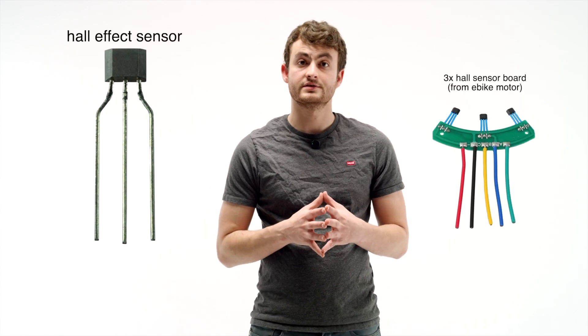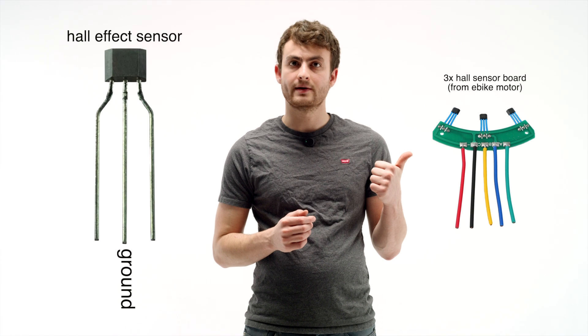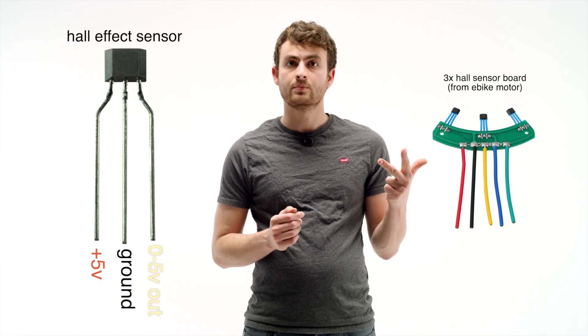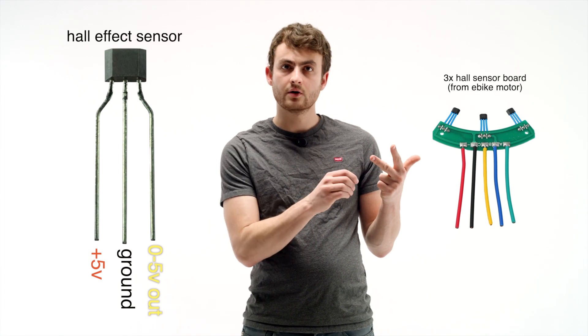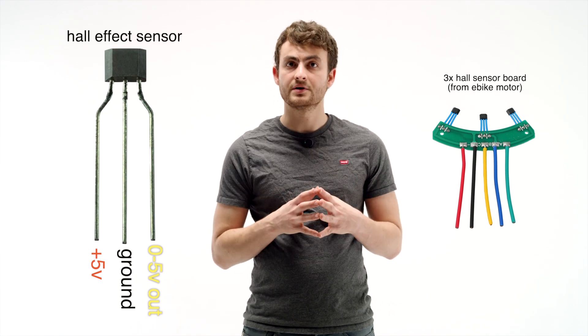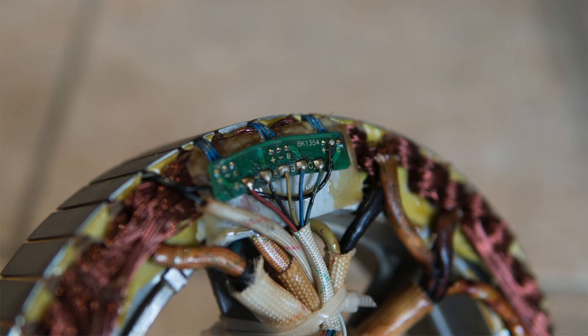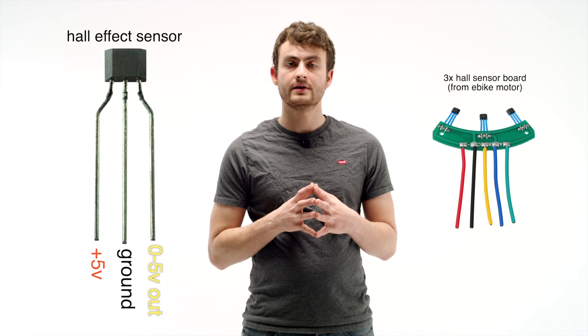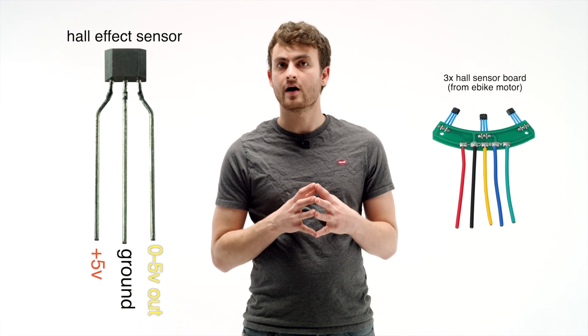The way a hall effect sensor works is it has three wires. The negative goes to your battery minus, positive gets five volts from the speed controller, and the output outputs somewhere between zero and five volts based on how much of a magnetic field the sensor is exposed to. By placing three of these sensors within your motor and spacing them evenly, as your motor spins your speed controller knows exactly how fast your motor is going. Your speed controller can use the information from these hall sensors to bring your motor to a smooth start from a full stop and these hall sensors can plug directly into your display to tell you how fast you're going.